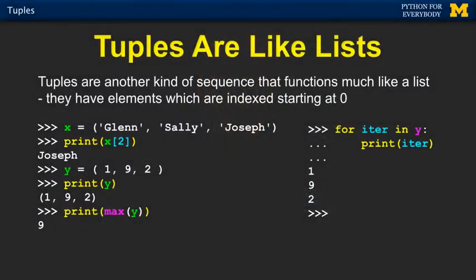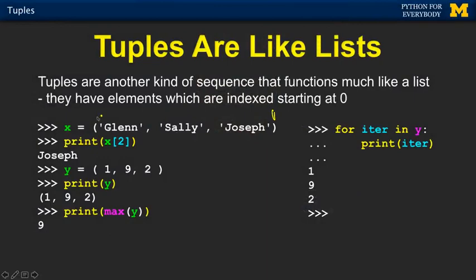So they're really unmodifiable lists. Here's just the syntax of tuples, but it looks exactly like lists except we're going to use parentheses. So here is a three-tuple. The concept of tuple — the word tuple comes from mathematics: two-tuples, three-tuples.